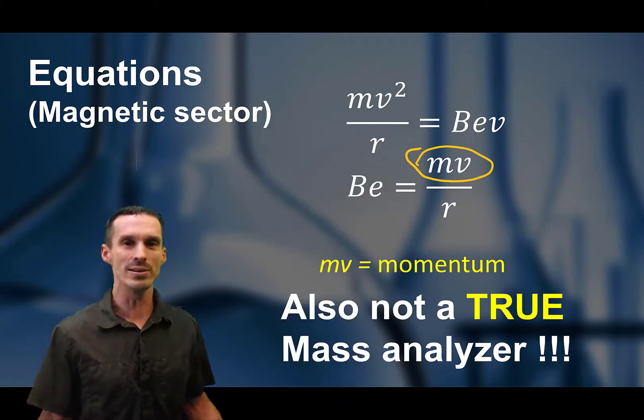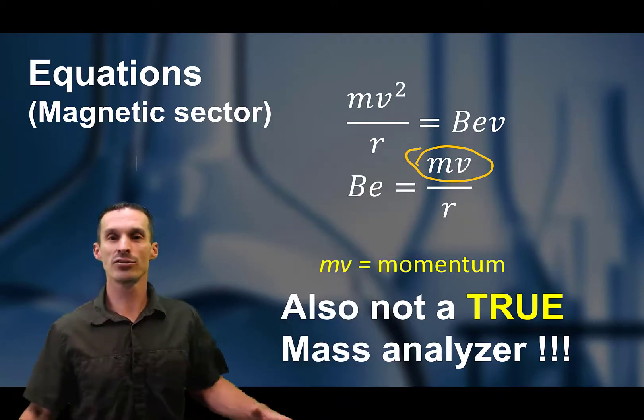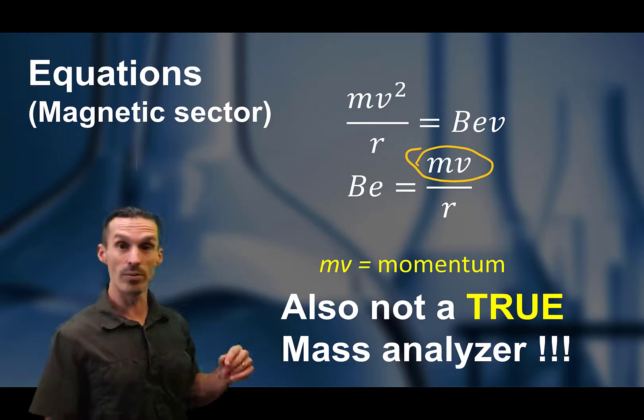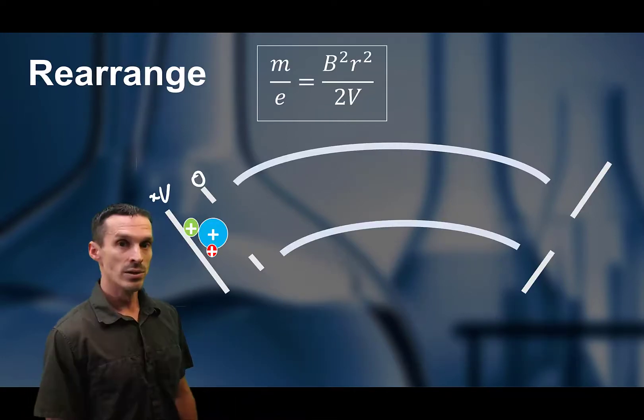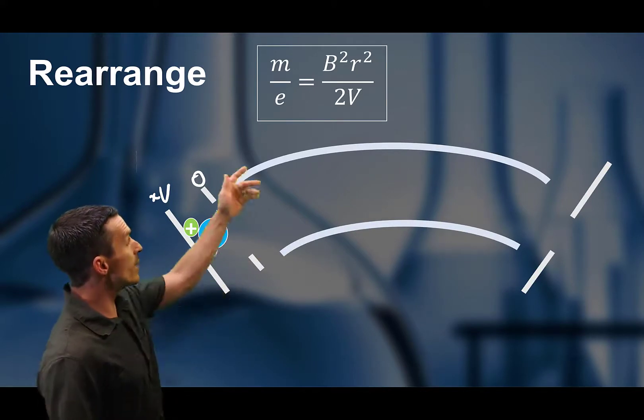Well, okay, it is. It just doesn't separate ions strictly according to m over z. This momentum term, the velocity, comes into effect.